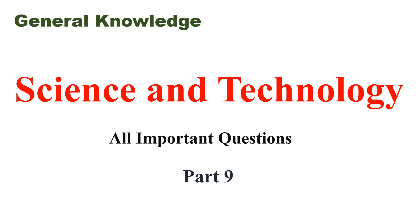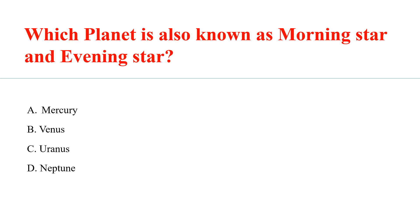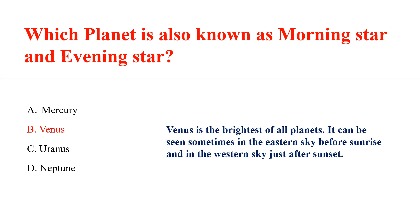General Knowledge Question on Science and Technology. Which planet is also known as Morning Star and Evening Star? Venus is the brightest of all planets. It can be seen sometimes in the eastern sky before sunrise and in the western sky just after sunset.